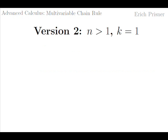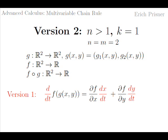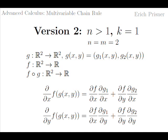Let's now discuss Version 2 of the chain rule, where the function g has more than one input value. For simplicity we only discuss the case n equals m equals 2. Let the two components of g be g₁ and g₂, so g(x, y) = (g₁(x, y), g₂(x, y)). We also have f from ℝ² to ℝ, and the composed function f∘g from ℝ² to ℝ. Since both g and f∘g have two independent variables, we ask for partial derivatives. We obtain the two chain rule formulas by replacing the ordinary derivatives with partial derivatives, and we get the same structure as before but with partial derivatives throughout.